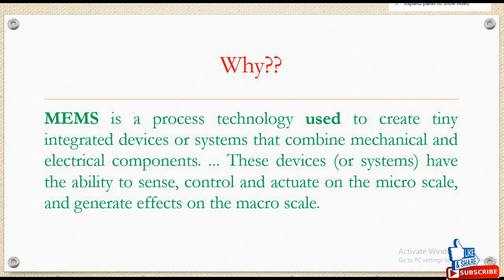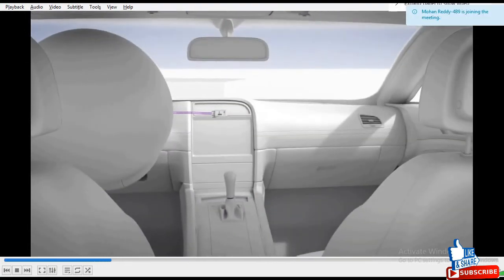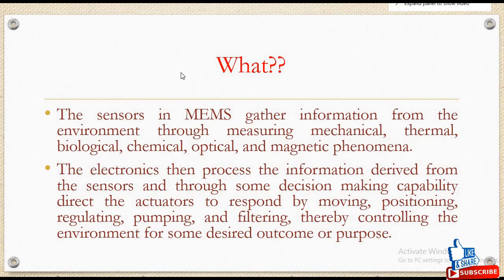the airbags will open — MEMS sensor is what works there. MEMS is used in cars where any variation, any vibration, or any tilt is detected by the accelerometer. If it crosses beyond a threshold, then the airbag will open. Activators will work upon it, converting mechanical vibrations into electrical or electronic signals. The sensors detect the vehicle impact and gather information from the environment.